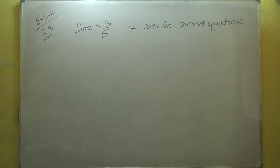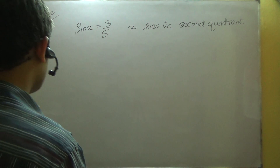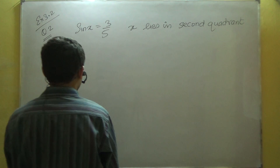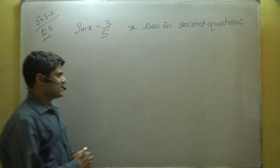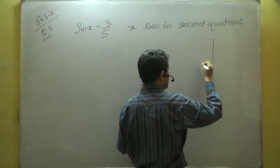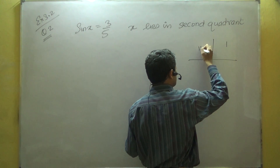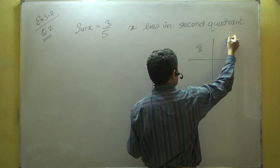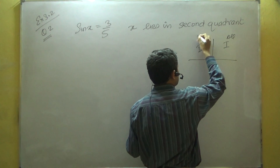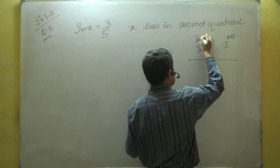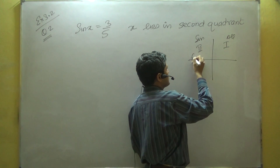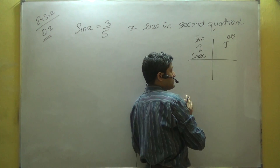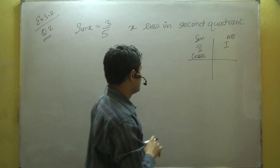Question number 2, exercise 3.2. Here we are given sin x equals 3 over 5 and x lies in the second quadrant. In the second quadrant, sine is positive, which means the cosecant (reciprocal of sine) is also positive.